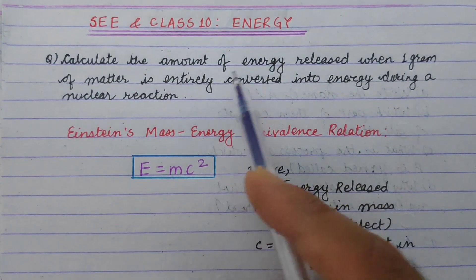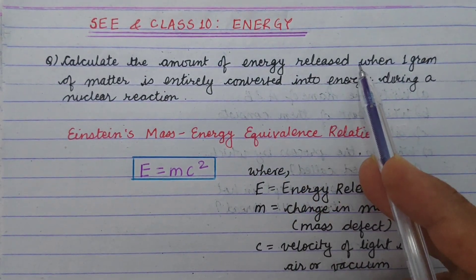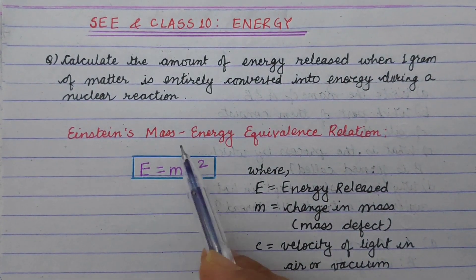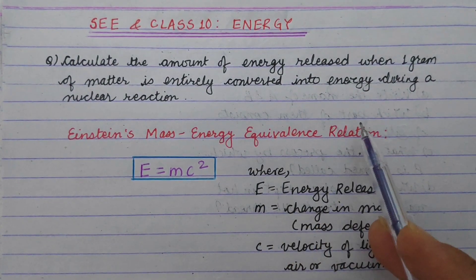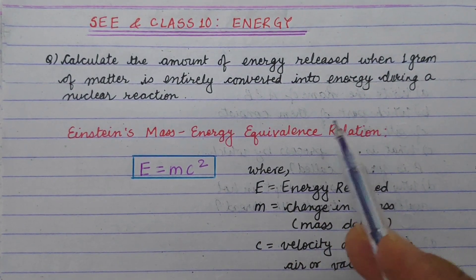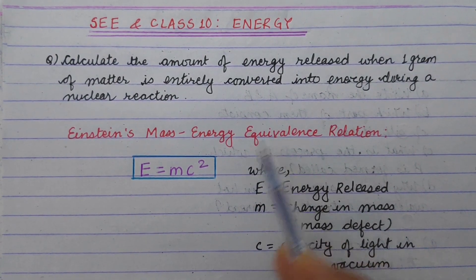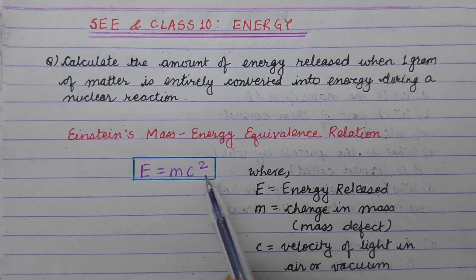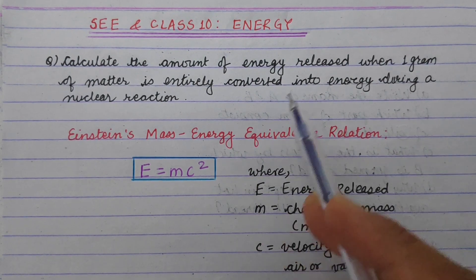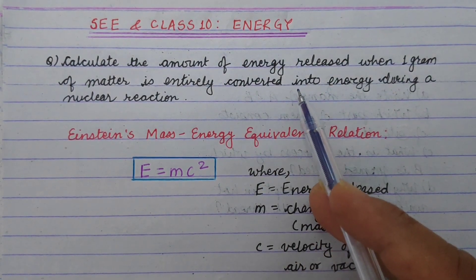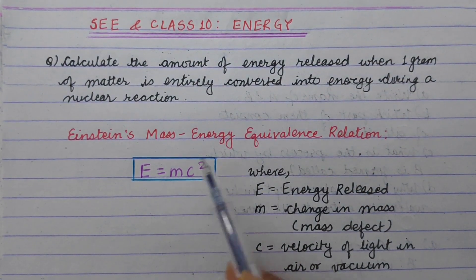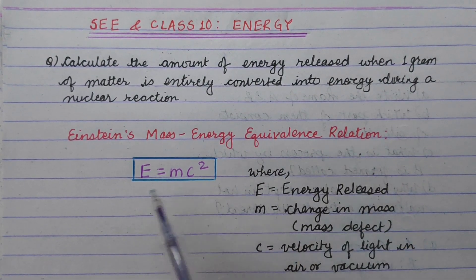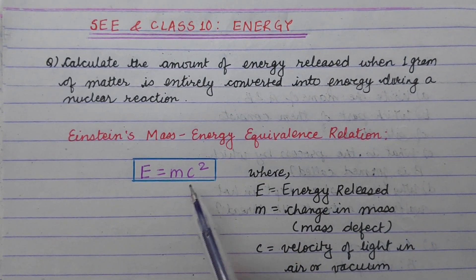This is the mass-energy equivalence relation, which is a popular relation: E equals mc squared. This calculation uses Einstein's mass-energy equivalence relation, E is equal to mc squared.